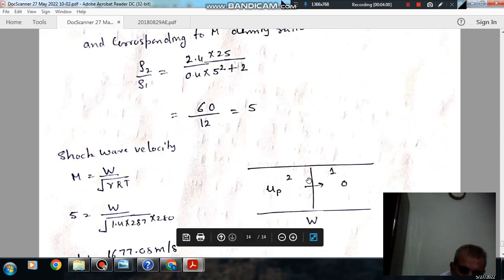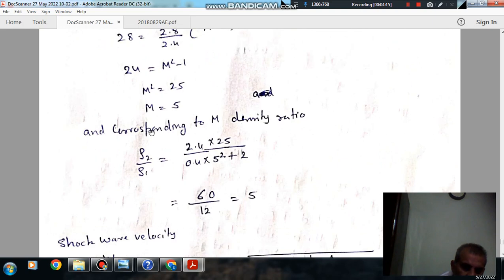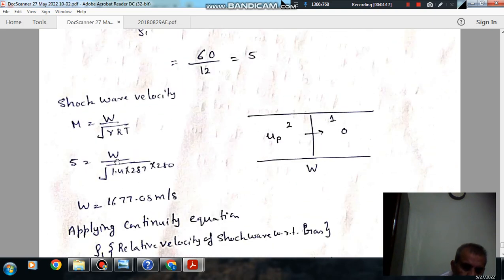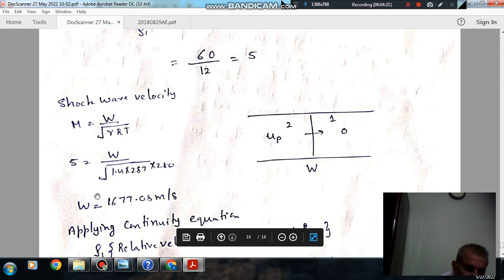Now we can apply continuity equation for this portion with velocity U and this portion with velocity zero because this is the shock wave with velocity W. The velocity of shock can be determined like this: M equals W divided by gamma R T. W is calculated using gamma RT where temperature is 280.